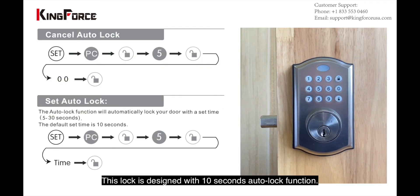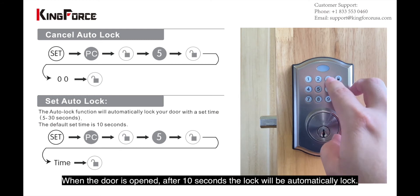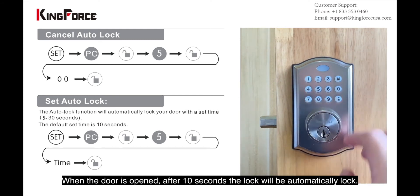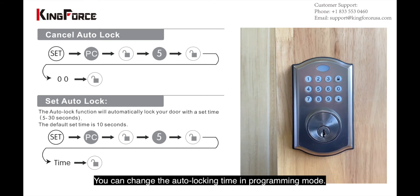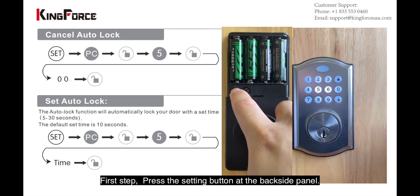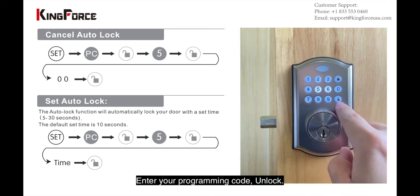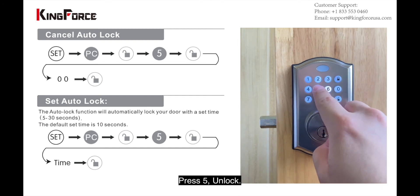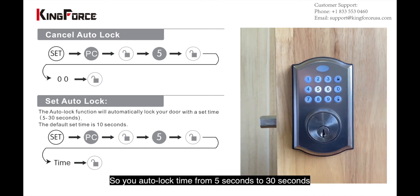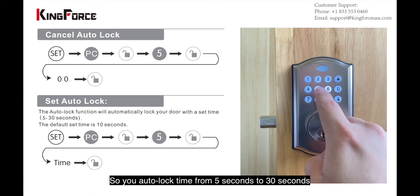This lock is designed with a 10-second auto-locking function. Once the door is open, after 10 seconds your door will be automatically closed. You can change the auto-locking time in programming mode. The first step: press the setting button, then enter your programming code and unlock, then push number five and unlock. You can set the auto-locking time from five seconds to 30 seconds.